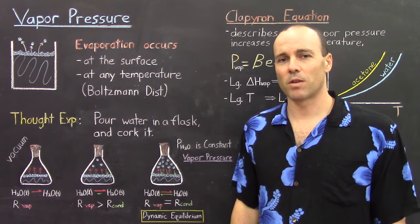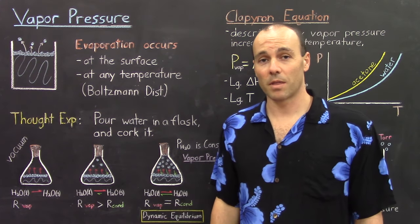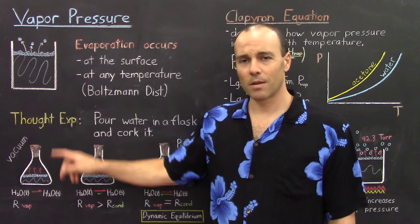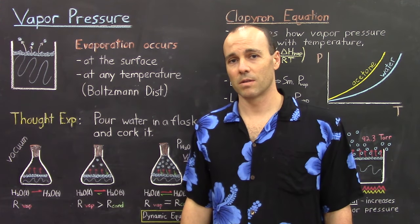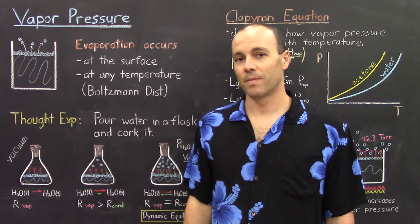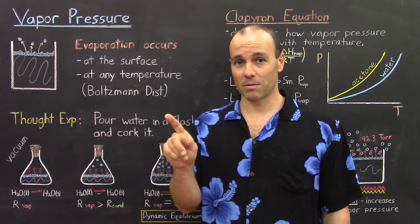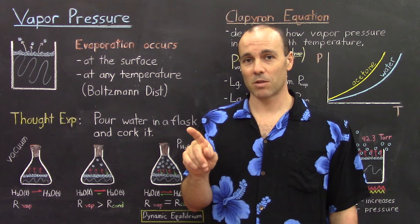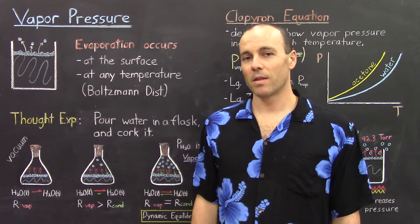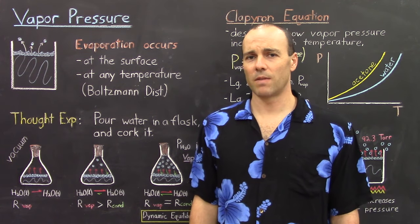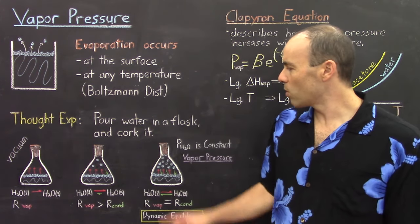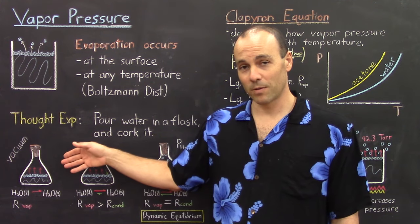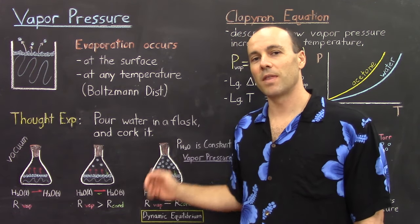To really understand what vapor pressure is and how it works, we're going to do what's called a thought experiment — a tool used by scientists to think their way through how a certain phenomenon works. Einstein used thought experiments; he sort of popularized them when he was trying to understand certain difficult concepts in special relativity. The thought experiment we're going to use to better understand vapor pressure is to pour water into a flask and cork it. We're going to imagine that we pour water into a flask and cork it, and think our way through what happens.